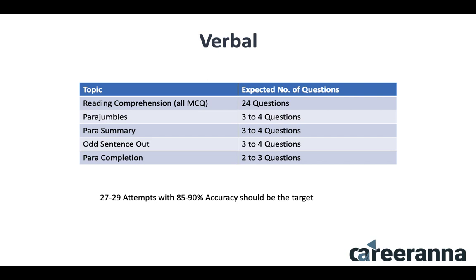Coming to the important topics of Verbal based on their weight in the examination: out of 34 questions, 24 are going to be from Reading Comprehension. This is something we keep repeating in Verbal classes — RCs are the most important topic of the Verbal section. If you can develop 80% attempt with 85 to 90% accuracy in RCs, your 99.5 percentile in Verbal is very easy. Apart from RC: para jumbles 3 to 4 questions, para summary 3 to 4 questions, odd sentence out 3 to 4 questions, and para completion 2 to 3 questions.